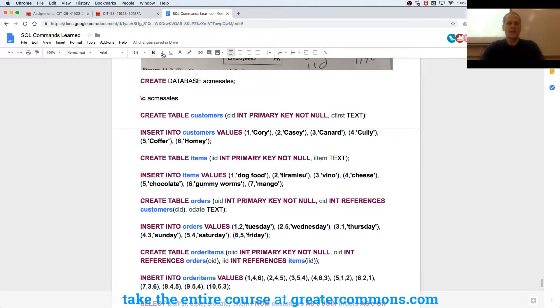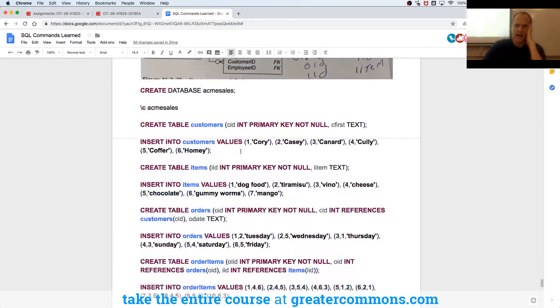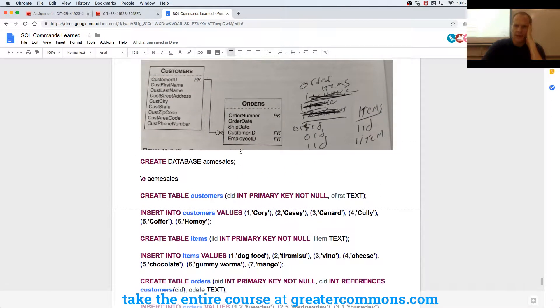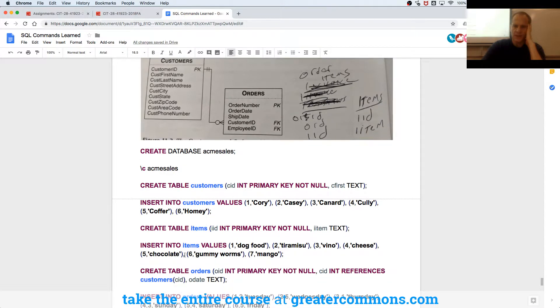And then we created a table Customers with ID and first name, and we inserted values. We created a table Items. And so we have Customers, we have Orders, and then we have Items here. It's going to have an Item ID and an Item. That's one table. So I create that table Items, and I insert some values into Items.